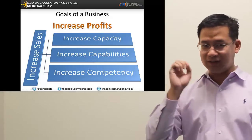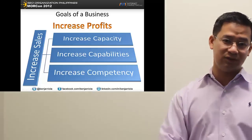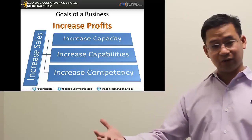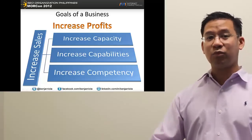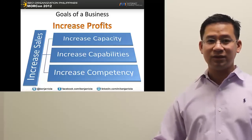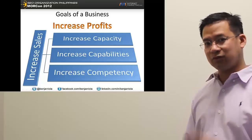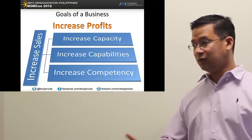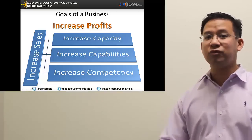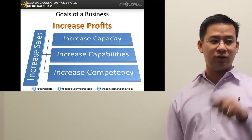Looking at these three C's — increased capabilities, increased competency, increased capacity — these help out in increasing sales. The more sales you get, assuming your expenses don't increase, the more profits you earn. That is the goal. Any business, that's basic — not even SEO basic. Anyone running a business, whether it's your own freelance business, your own company, or your own small business — the main goal is to increase profits.